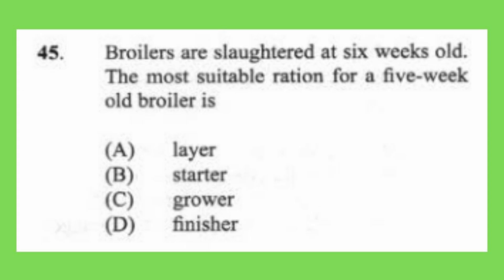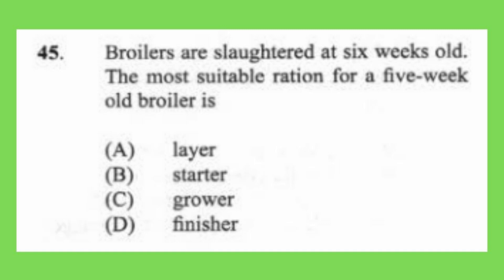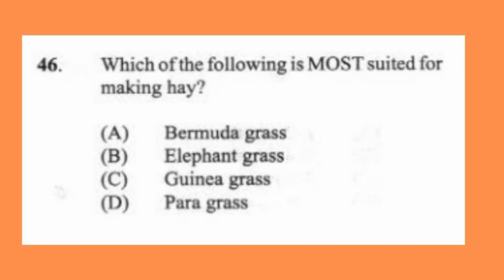Question 45: Broiler birds are slaughtered at six weeks old. The most suitable ration for a five-week-old broiler is (a) layer, (b) starter, (c) grower, (d) finisher. The answer is D, finisher. Chickens grow fastest from one to four weeks, receiving the grower ration with high protein. Once they reach five weeks — near slaughter — the finisher ration, which has a higher fat content, is fed.